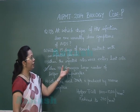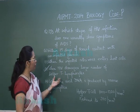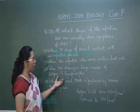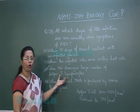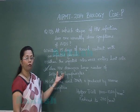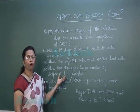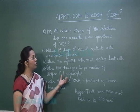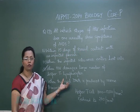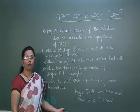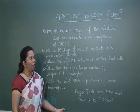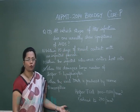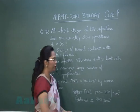Our most appropriate answer is the third one: when HIV damages a large number of helper T lymphocytes. At that point, the body becomes prone to a number of opportunistic infections, which is a characteristic feature of AIDS. Now let us discuss question 174.